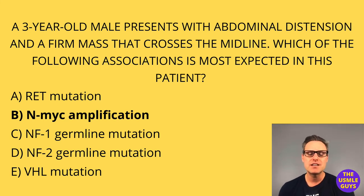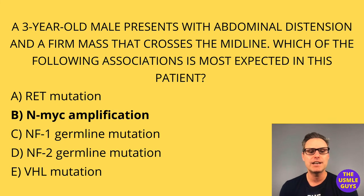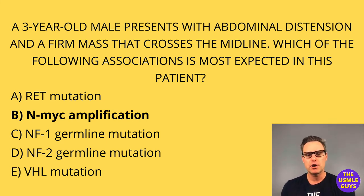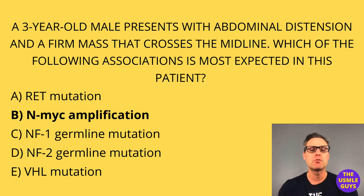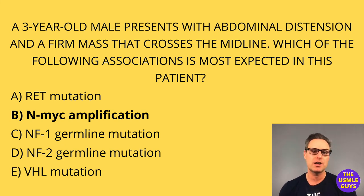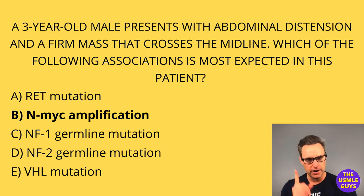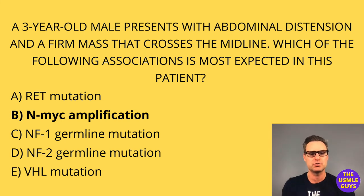Remember that neuroblastoma is easy to confuse with the Wilms tumor, as they have very similar findings. But neuroblastoma presents with abdominal distension and a firm, irregular mass that can cross the midline, while the Wilms tumor is unilateral — a very important distinction to make so you do not confuse these two.